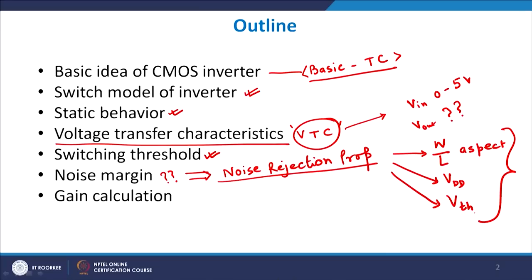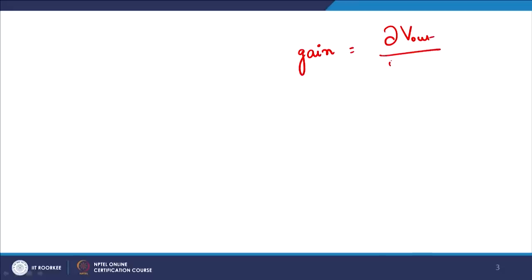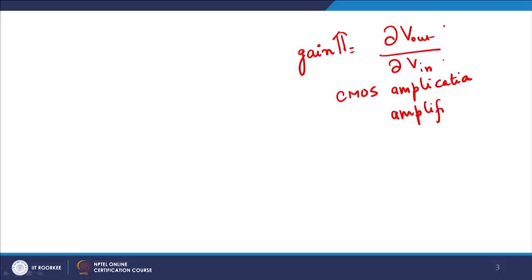The last part of the outline will be gain calculation — quite important because the CMOS structure or CMOS inverter has been the mainstay not only for digital design but for analog design as well. Gain, as the word suggests, basically means the rate of change of output with input — it is del Vout / del Vin. If your gain is high, you can use CMOS for amplification purposes — as an amplifier.